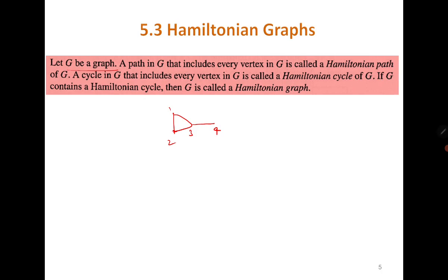A path is there — you can start with 2, 1, 3, 4 — but from 4 you cannot come back to 2, so a cycle is not there. A cycle in G that includes every vertex is a Hamiltonian cycle, and if a graph contains a Hamiltonian cycle, we call it a Hamiltonian graph.